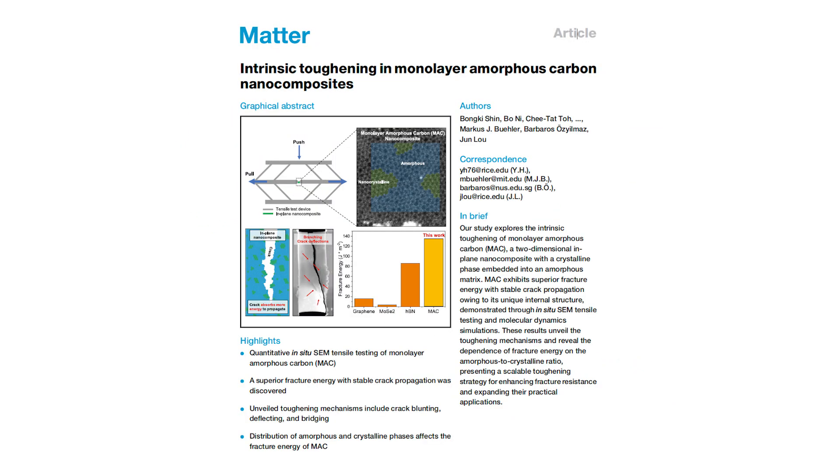They saw that in monolayer amorphous carbon, it wasn't just a quick tear. It advanced in increments. That's sometimes referred to as stable crack propagation, meaning you can keep pulling and the tear won't catastrophically spread all at once. That's great news if you want to avoid sudden catastrophic failure in applications.